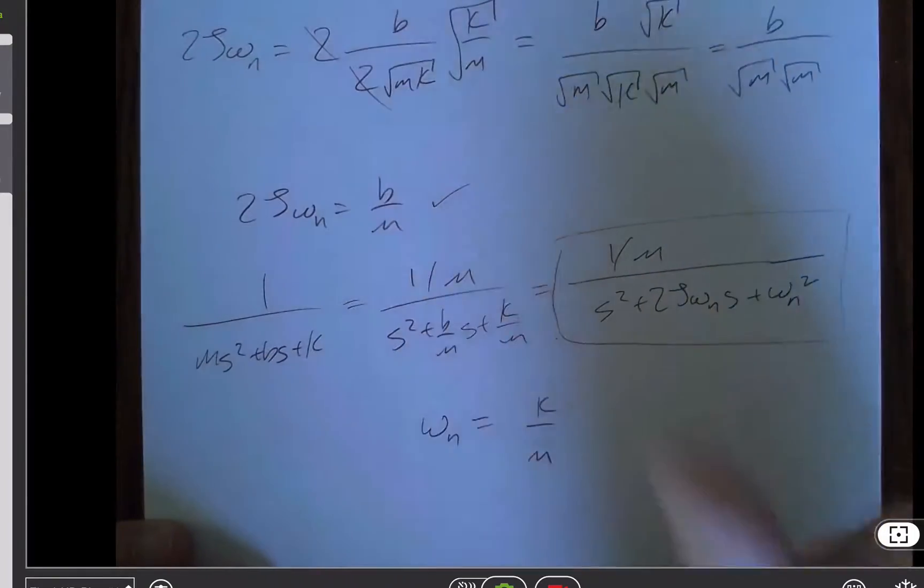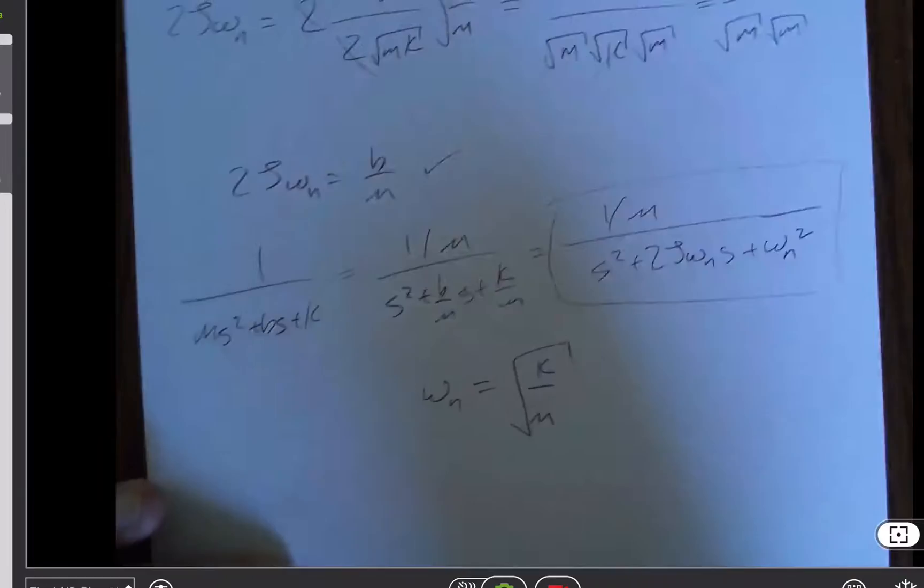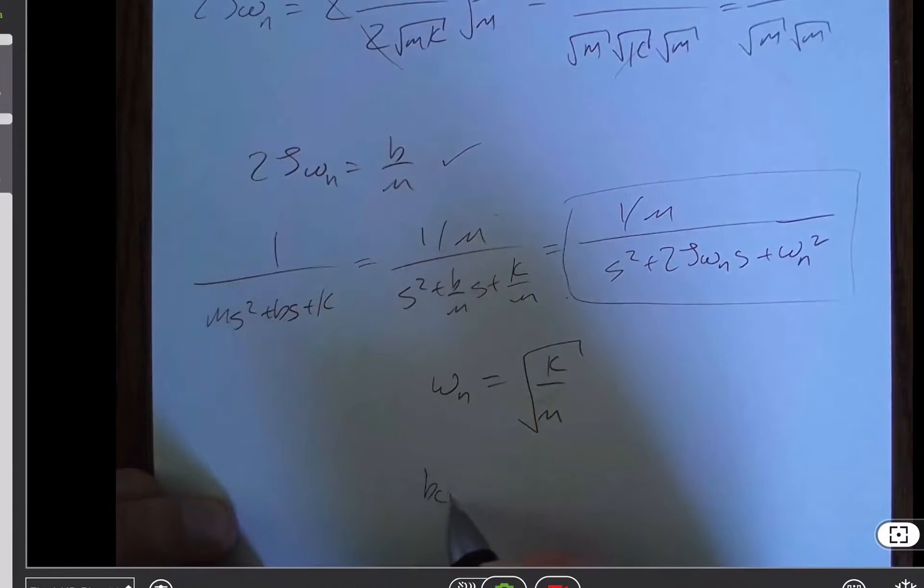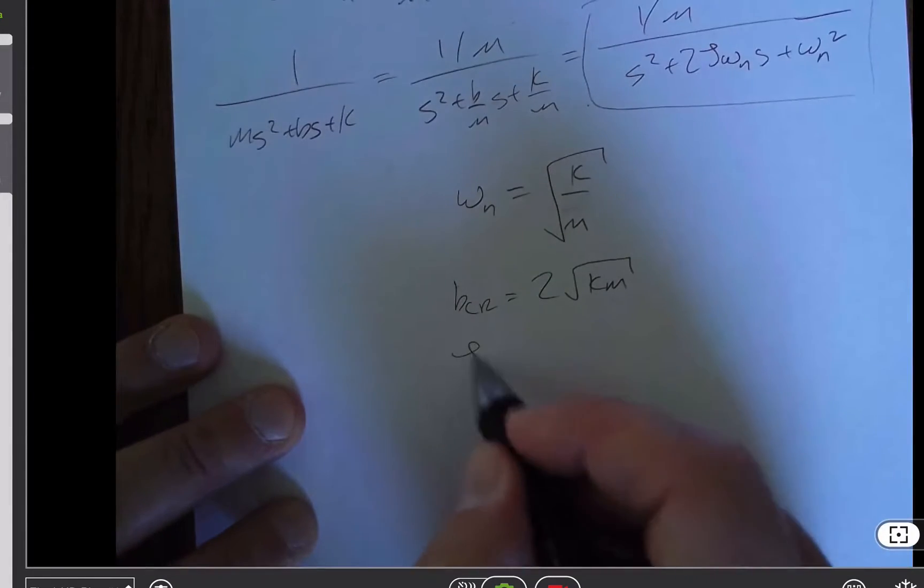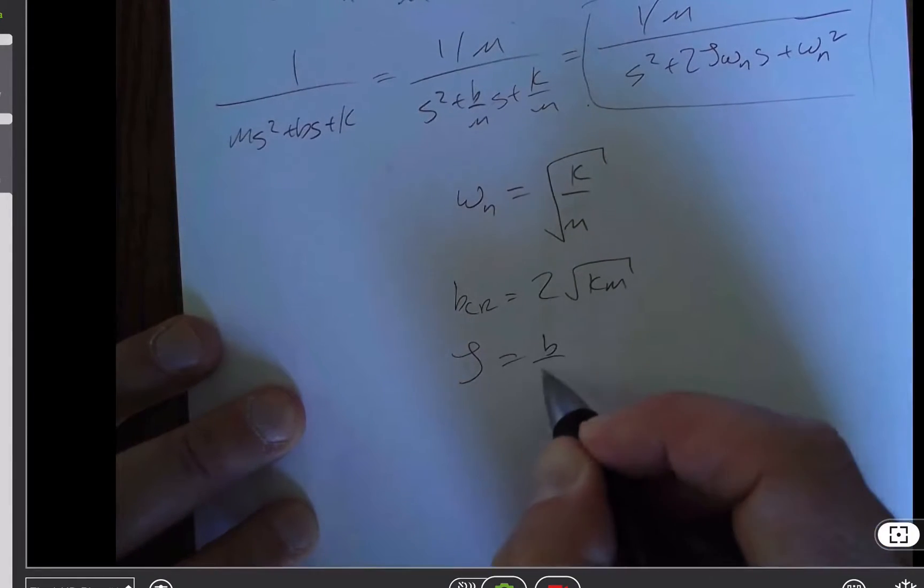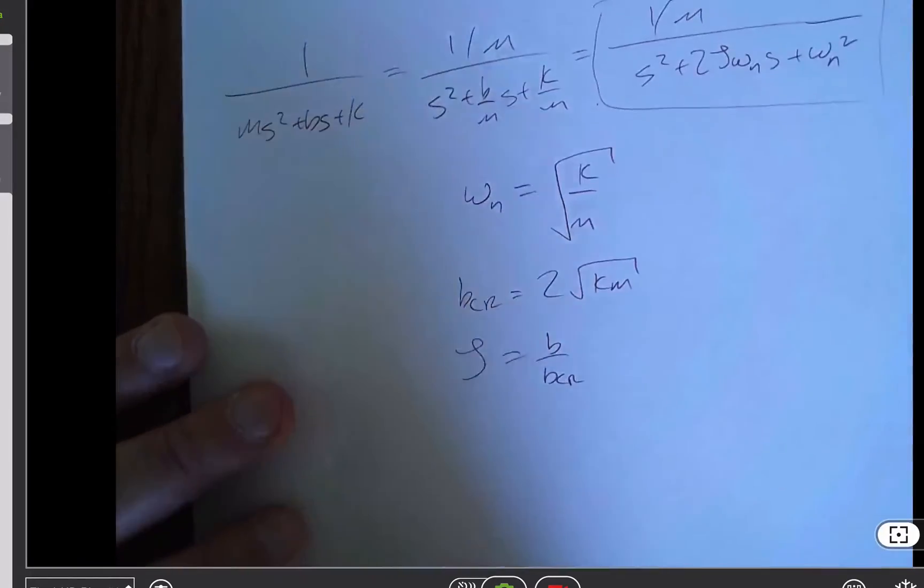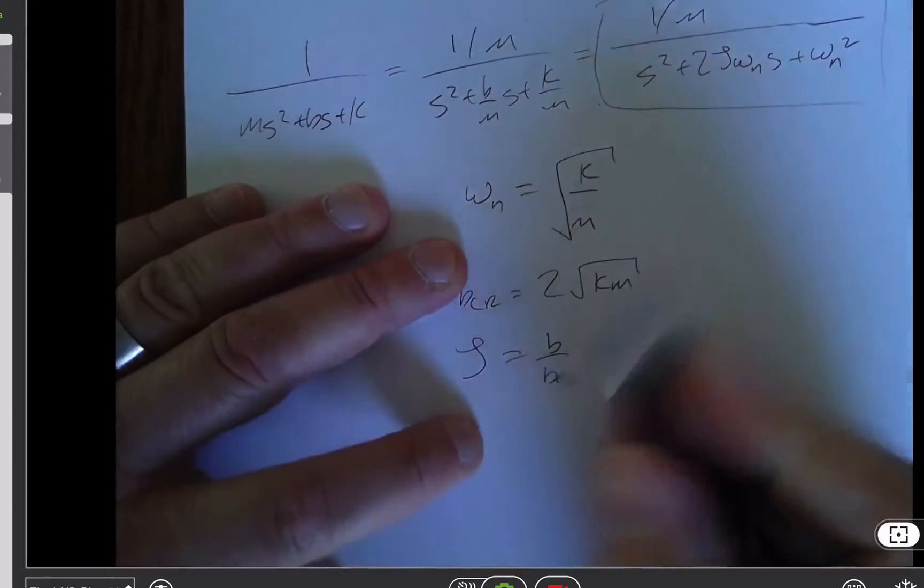And then b critical comes from the quadratic formula. And so it is 2 times the square root of k times m. And then zeta is b divided by b critical. Well, those are supposed to be subscripts.